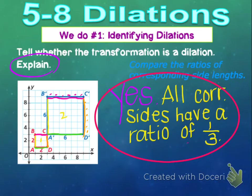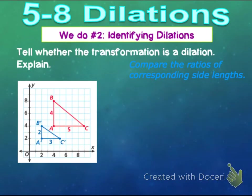Let's try another one together before you try one on your own. Number two: tell whether the transformation is a dilation, and explain. Again, we're going to compare the ratios of the corresponding side lengths, starting with this side length right here.